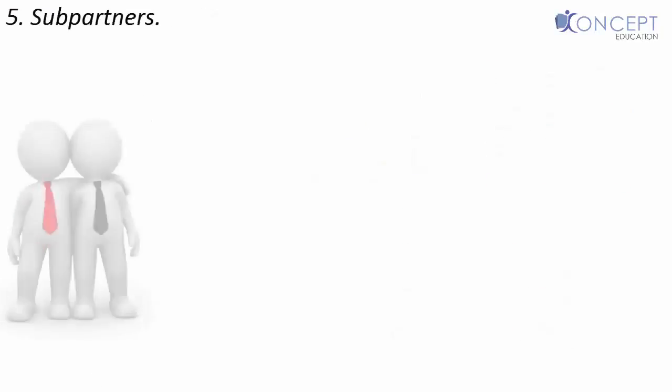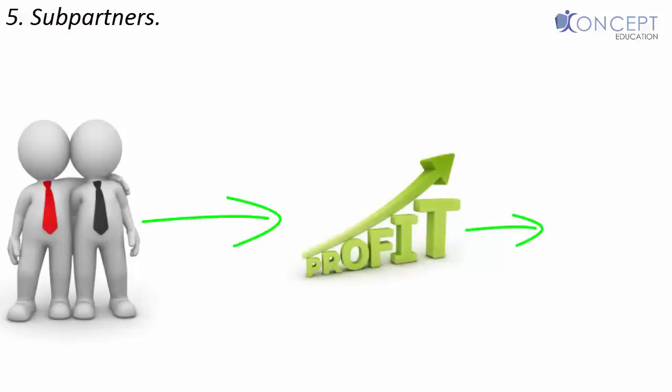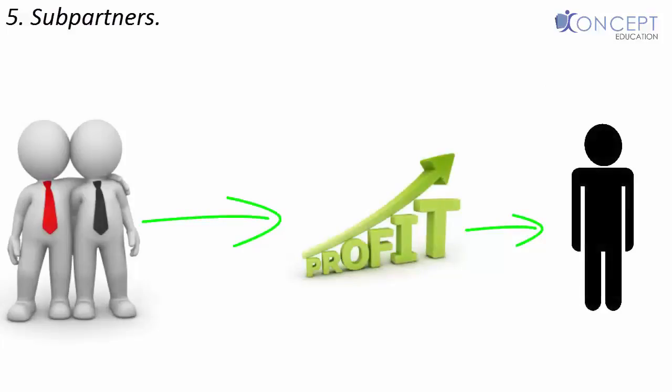Subpartners: Where a partner agrees to share his profit derived from a firm with a third person, that third person is called a subpartner. This third person cannot hold himself to be a partner. Also, he has no rights against the firm and no liabilities for the firm.